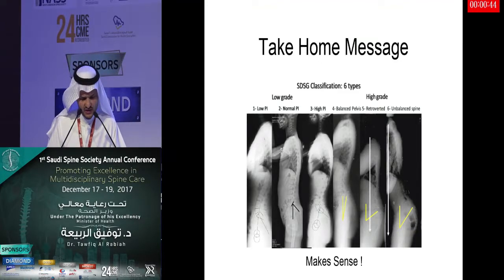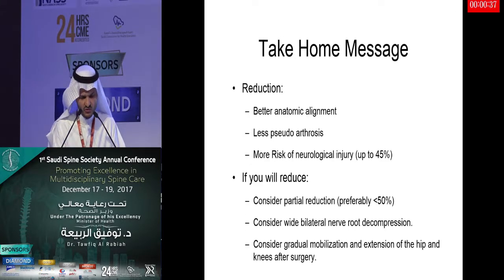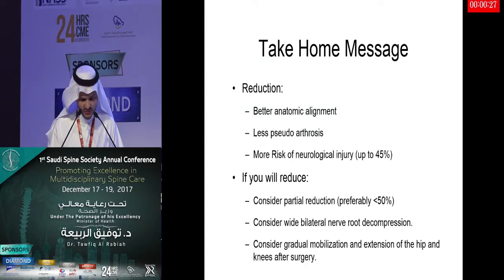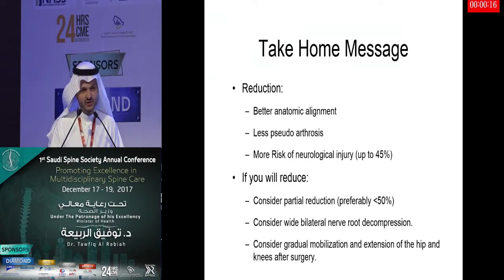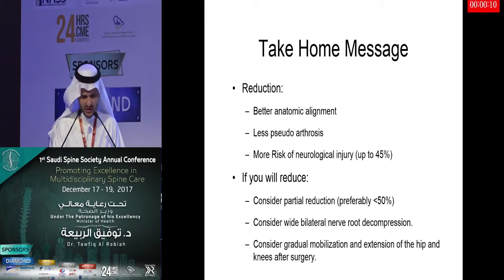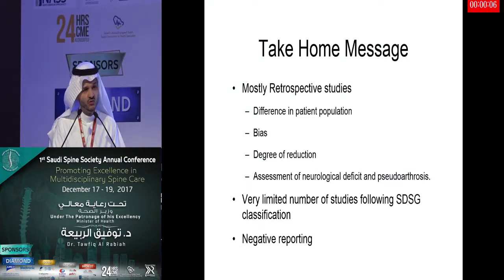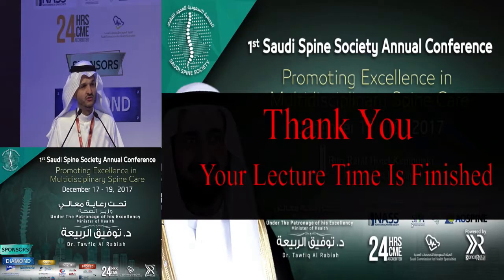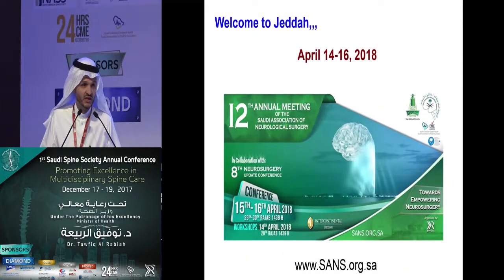Take-home message: This classification makes sense — it helps you understand the patient's posture and pathology. If you decide to reduce, reduction is indicated for better alignment, but you don't have to achieve full reduction. Be careful especially in the last 50% of reduction. If reducing, consider bilateral nerve root decompression, and plan gradual mobilization post-surgery with hips and knees flexed. The existing studies are mostly retrospective; there is a role for databases and multi-center trials. Thank you, and I would like to invite you to Jeddah in April for the Saudi Neurosurgery Meeting.